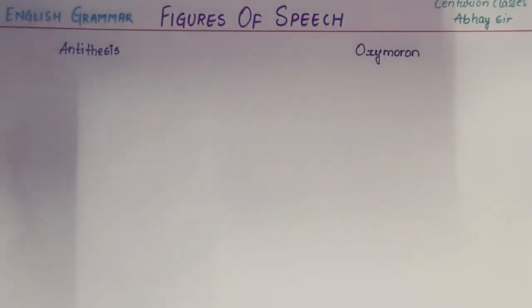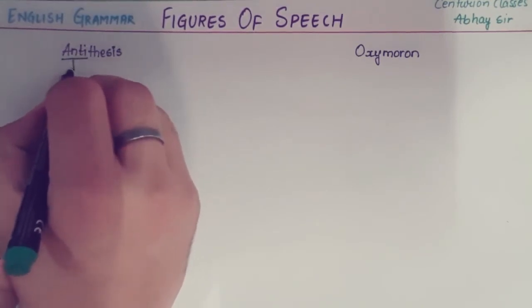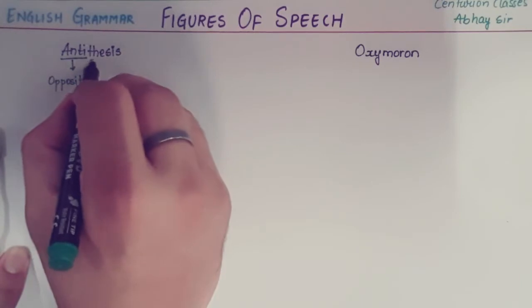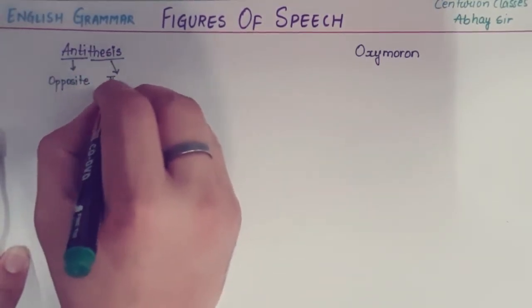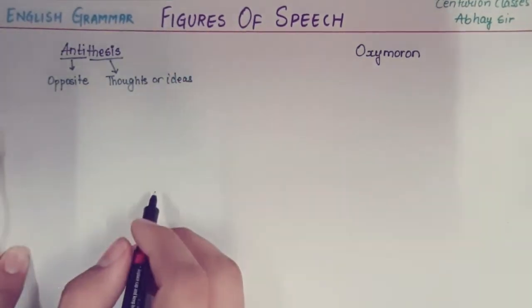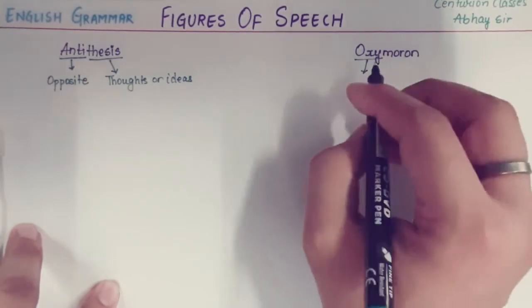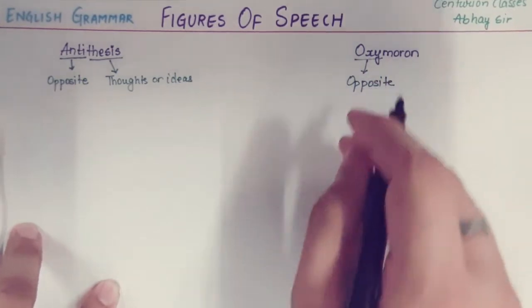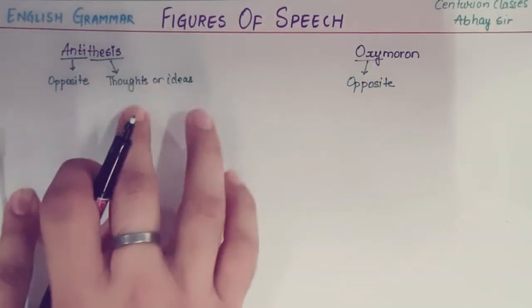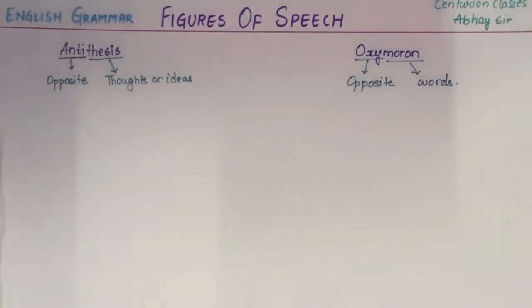Let's start with antithesis and oxymoron. Let us break these words first. 'Anti' means opposite, and 'thesis' means thoughts or ideas. In the same way, let us break 'oxymoron' — 'oxy' also means opposite. So the only difference is: 'thesis' means thoughts or ideas, while 'moron' here means words.